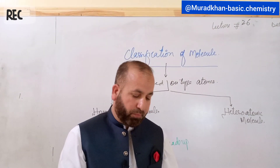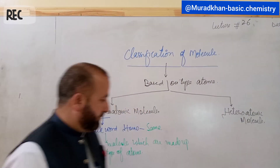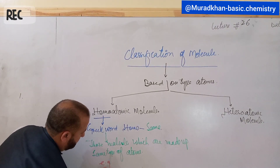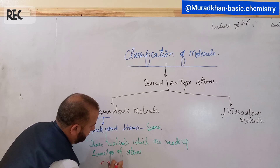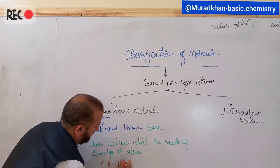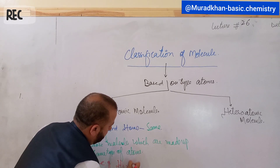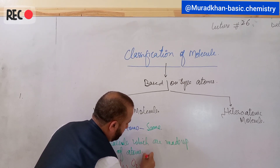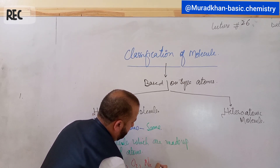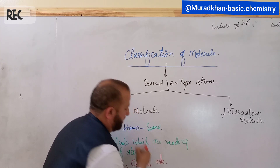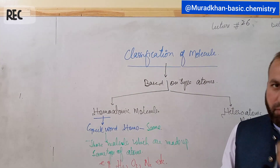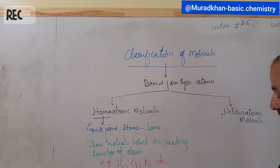For example, H2, O2, N2, and so on. These molecules are made up from the same type of atom. The other one is heteroatomic molecules.